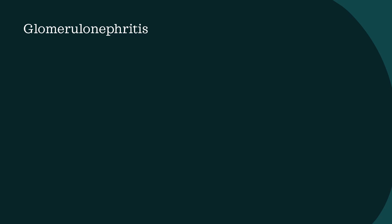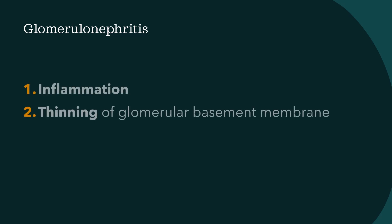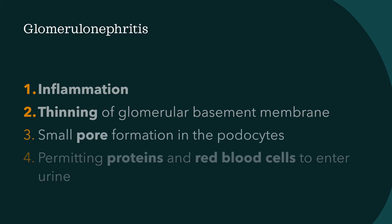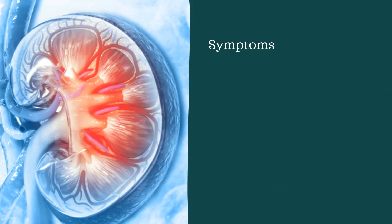It's different to nephrotic syndrome, which doesn't present with hematuria, because the inflammation results in thinning of the glomerular basement membrane, and then you have small pore formations in the podocytes, allowing proteins and red blood cells to enter the urine. Patients may have hematuria, proteinuria, and as a result, hypertension. If there's damage to the nephron, this may reduce glomerular blood flow, resulting in less urine output, or oliguria. Over time, all of these effects together may lead to progressive renal impairment.